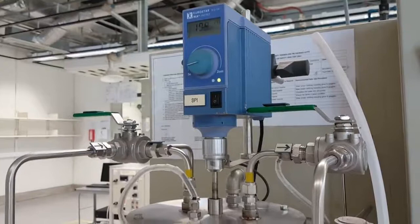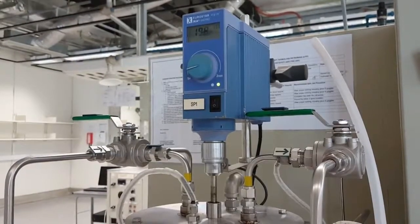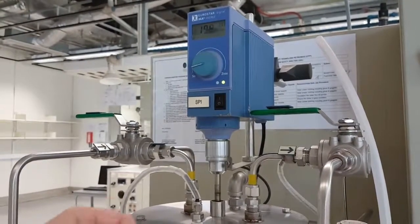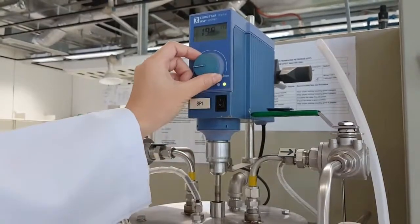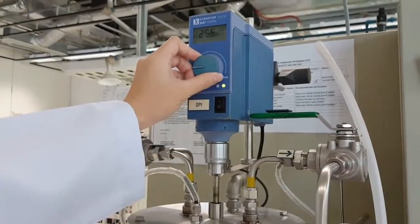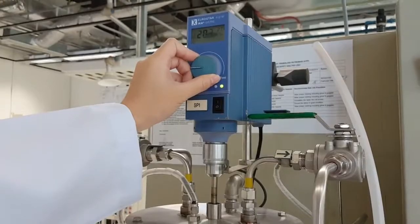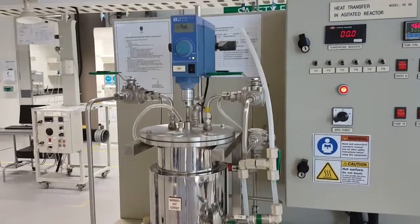For the third experiment, we repeat the first experiment, but we change the speed of the stirrer to 250 rotation per minute. Okay, so that's all from us. Thank you.